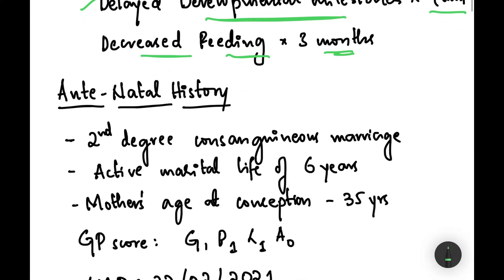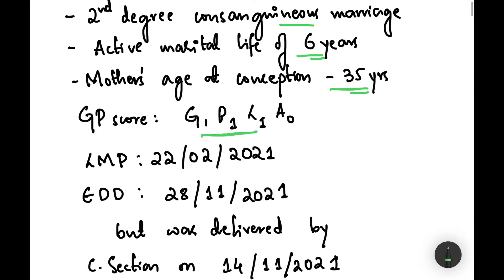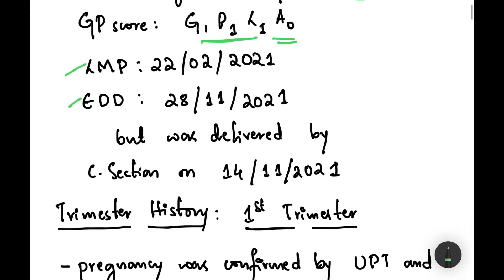Beginning with the antenatal history, it's a second degree consanguineous marriage with active marital life of six years. The mother's age at conception was 35 years. GP score was G1 P1 L1 and A0. Her LMP was on 22nd of February 2021 and expected date of delivery was 28th of November 2021, but was delivered by C-section on 14th of November 2021, which was two weeks before.